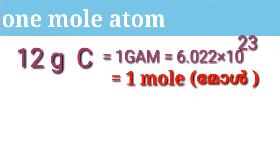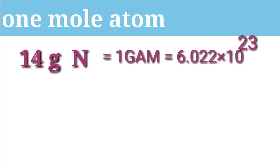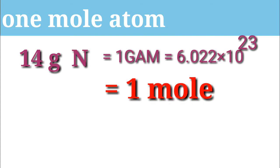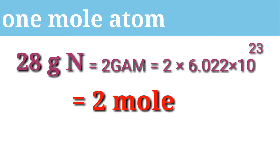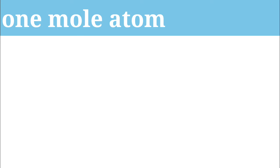1 mole of carbon atoms. 14 grams nitrogen — 1 gram gives 6.022 into 10²³ atoms, that's 1 mole. 28 grams of nitrogen — how much is it? 2 grams, 2 moles. 1 mole of atom means 6.022 into 10²³ atoms.